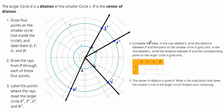Number four says complete the table. In the row labeled S, write the distance between P and the point on the smaller circle in the grid. So between P and the smaller circle: point E is two spaces, F is two spaces, P to G is two, and P to H is also two.